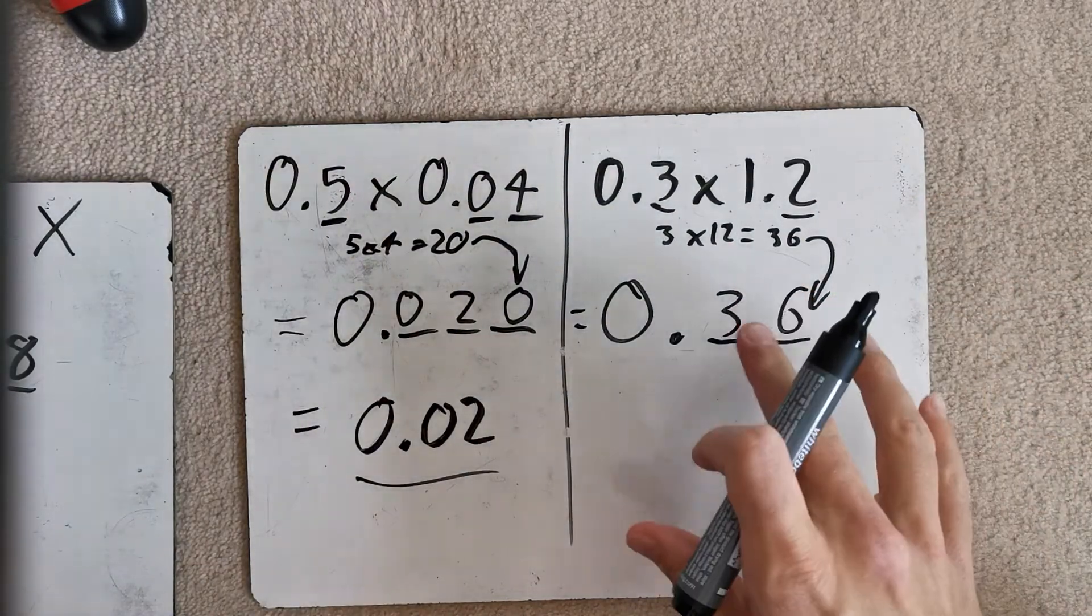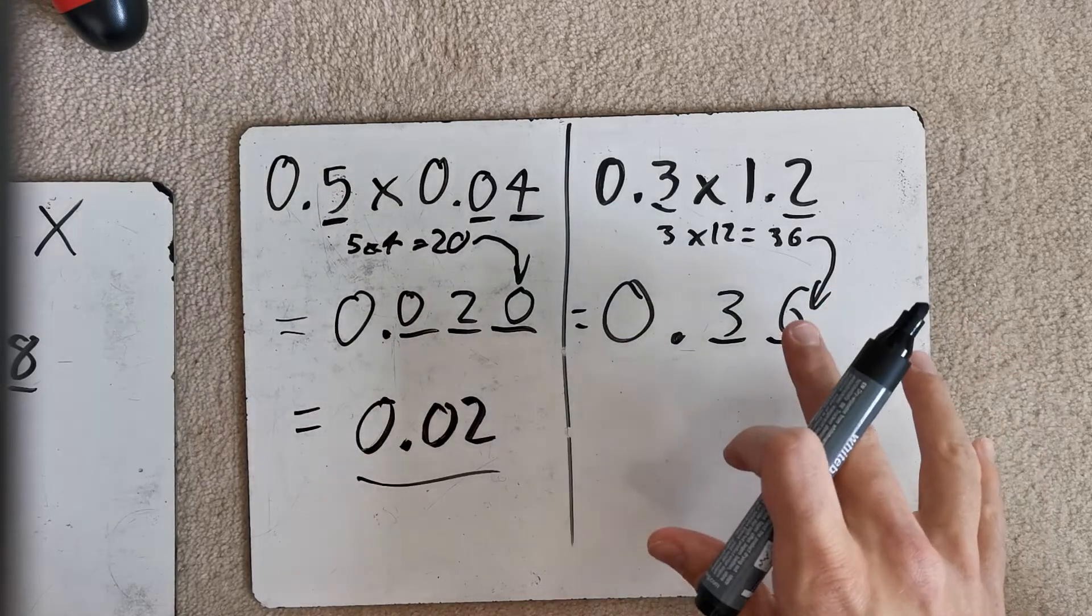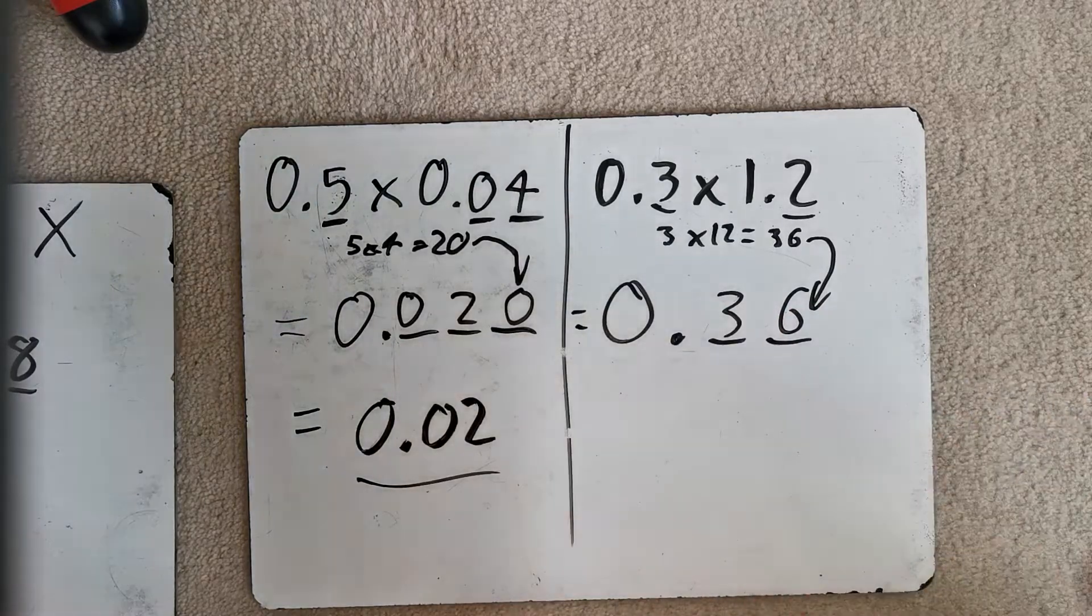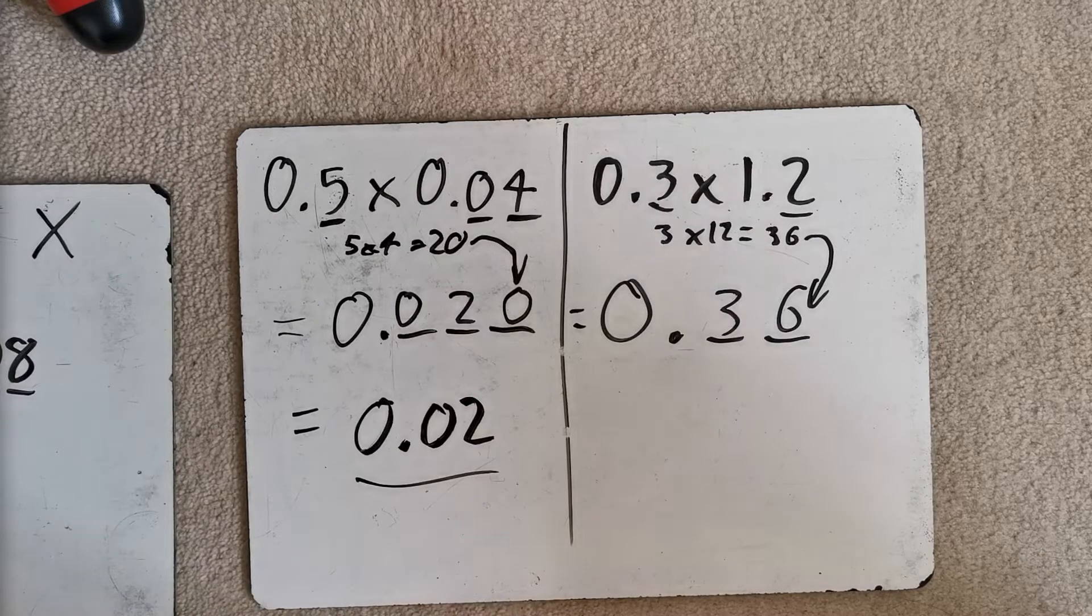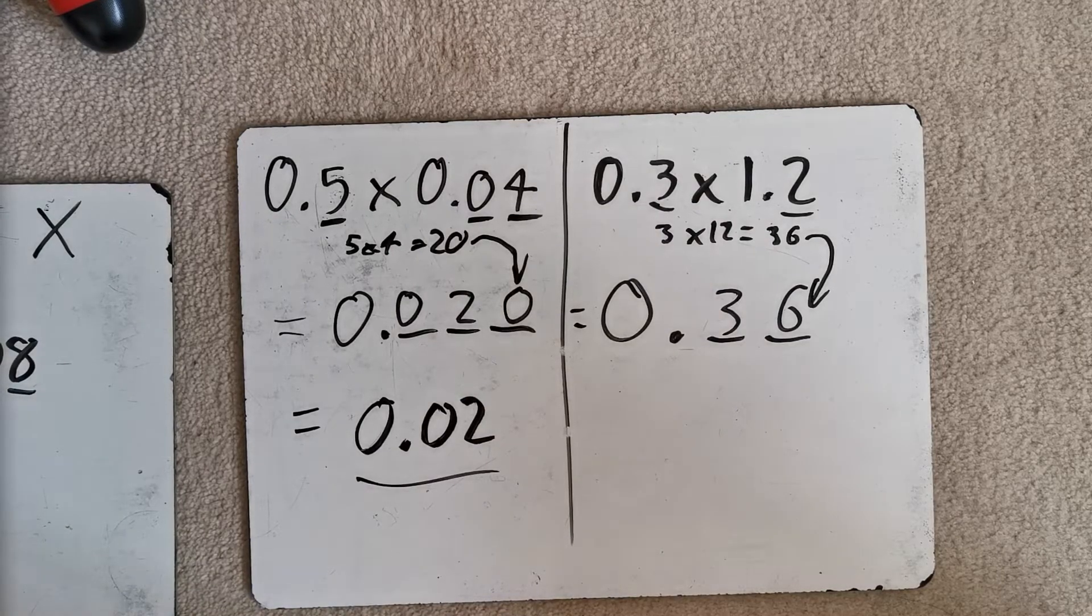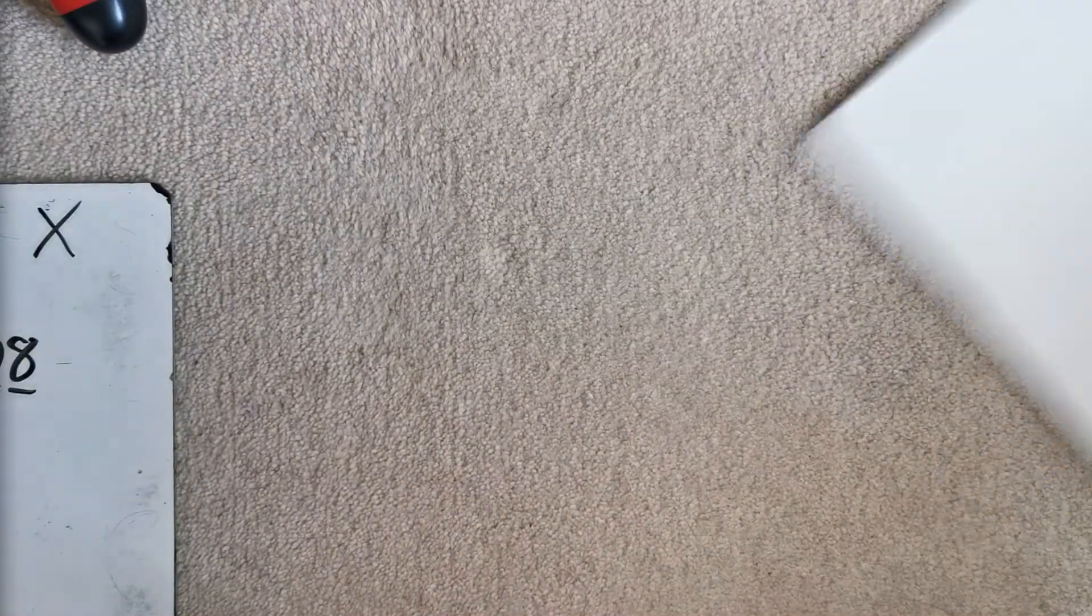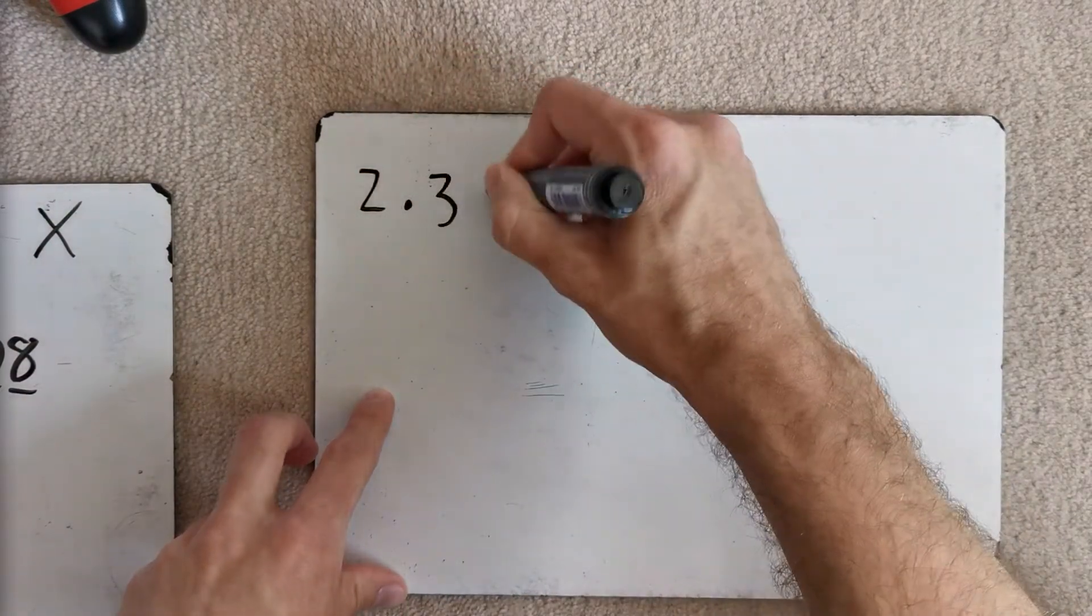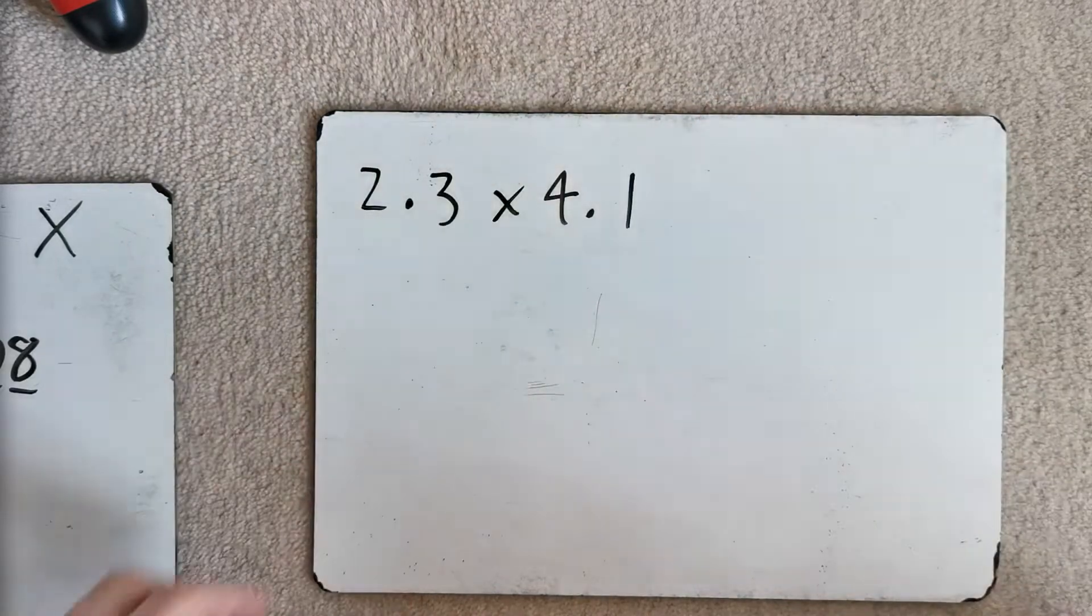Okay. Now, this is with simple numbers. Okay. Really, really low numbers. Ones that are to do with times tables that you can do in your head. Okay. You can do things like, you know, 8 times 8 in your head. You can do 4 times 7 in your head. You can do 12 times 12 in your head, even. Okay. However, you might not be able to do something like this in your head. So, you might be given something like 2.3 times by 4.1.